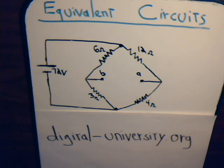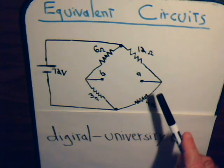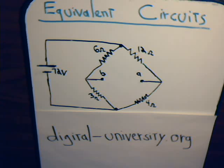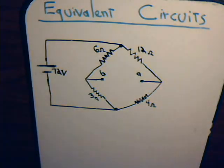This is video number 49 in our electrical circuits analysis series. In this video we want to determine for our bridge circuit its Thevenin and Norton equivalent circuits. In the previous video number 48 we introduced that concept and the principles involved in determining Norton and Thevenin circuit equivalents. So if you haven't seen that video you might find that helpful. Also a reminder that the playlist for all the videos is featured at the website digital-university.org. Okay, let's take a look at our circuit.